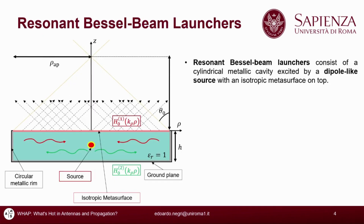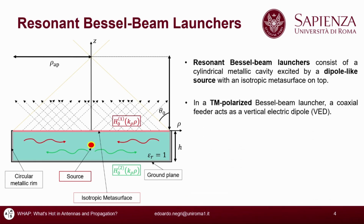An effective way to generate Bessel beams at mm waves is by exciting a cylindrical metallic cavity, whose top metallic plate is replaced by a partially reflecting sheet to allow for radiation. Such structures are commonly known as resonant Bessel beam launchers, and mainly exist in two types: TM and TE polarized. Regardless of polarization, the operating principle is the same.